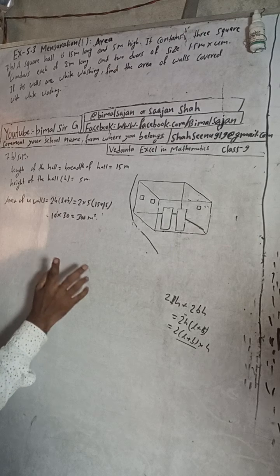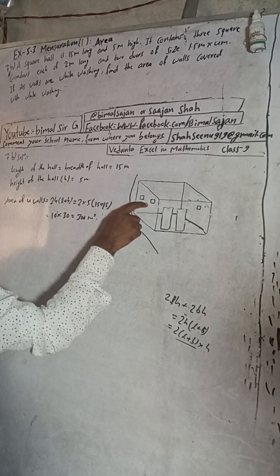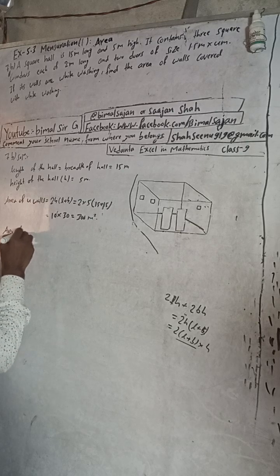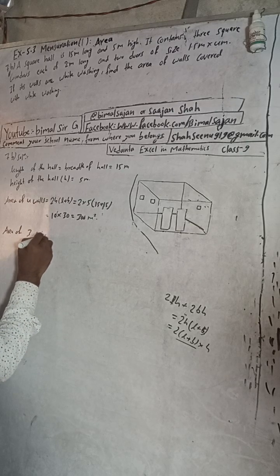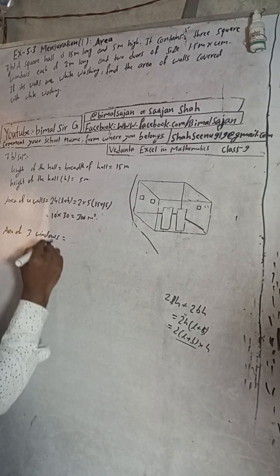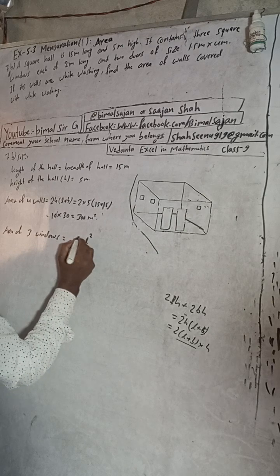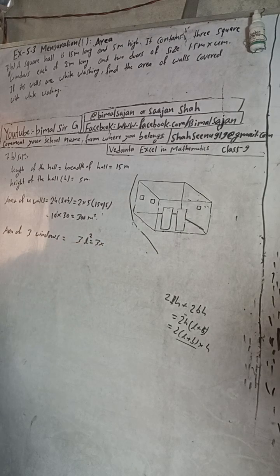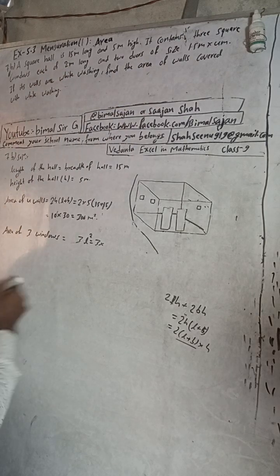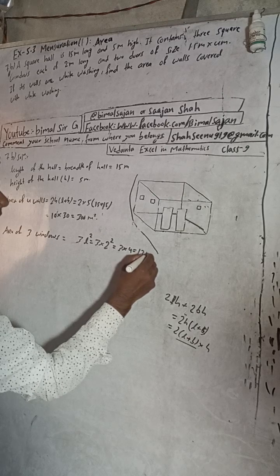Now we calculate the area of three windows. Each window is square shaped, so area of one window is l squared. There are three windows, so area of three windows = 3 × l². The length of each window is 2 meters, so area = 3 × 2 × 2 = 12 square meters.